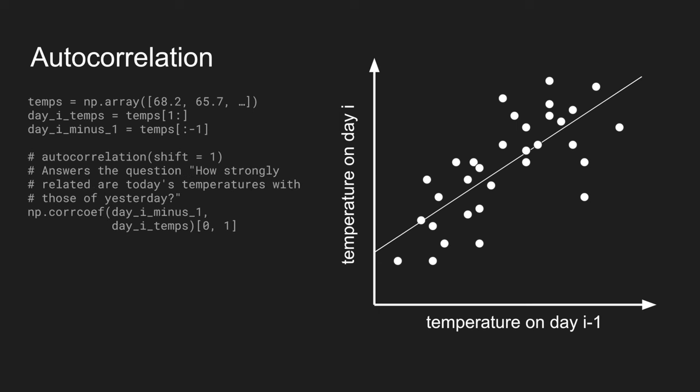Now, to calculate this, we would just use the core-coef-call, and put in the original dataset, and then the shifted dataset, and then find the coefficient of correlation between them.